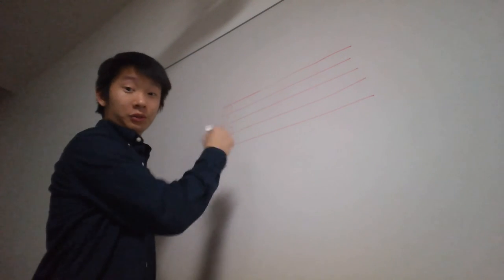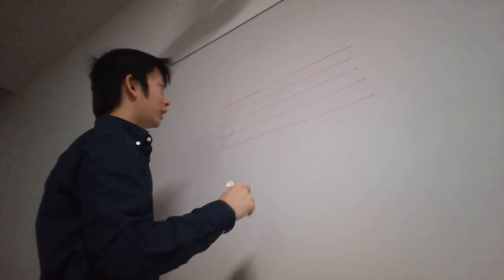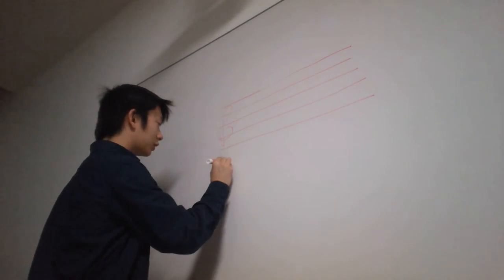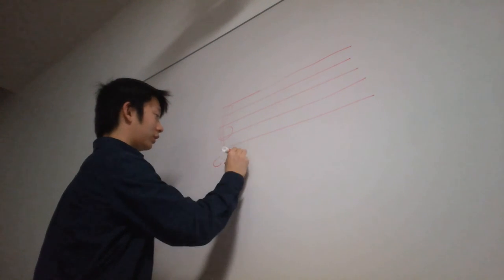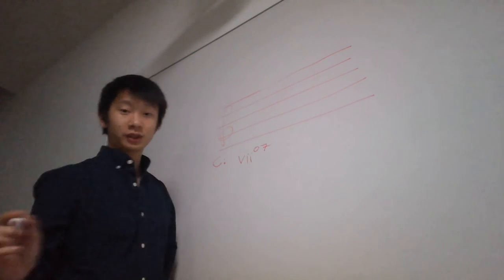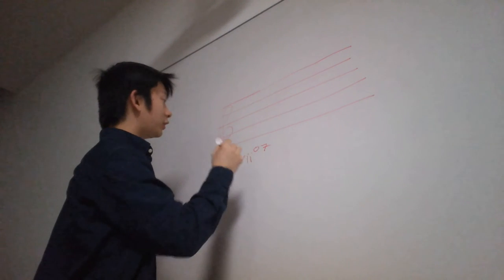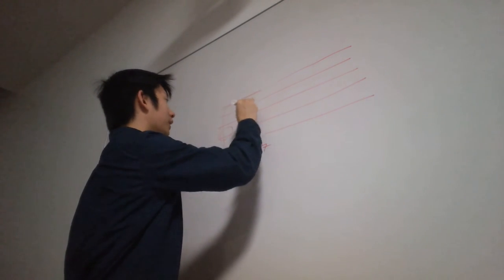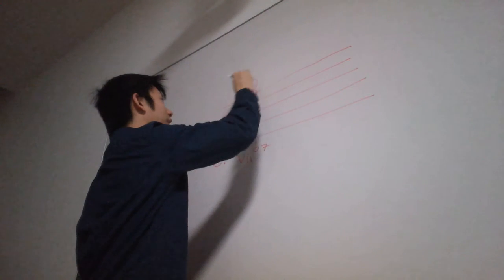We're going to basically stack a chord, four notes, a seven chord. So in the key of C major, our seven diminished chord is going to be spelled B, D, F, and then A. B, D, F, A.